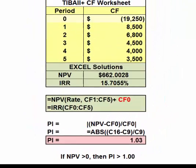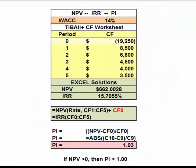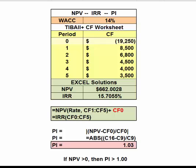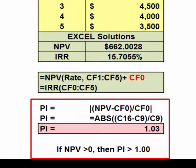Profitability index is a metric that's really closely related to NPV. It's a bang-for-your-buck measure. Profitability index is defined as the present value of the cash flows divided by the outflow. For this project, the present value of the inflows is NPV with cash flow zero added back. Since cash flow zero is negative, adding back means subtracting it from the NPV.